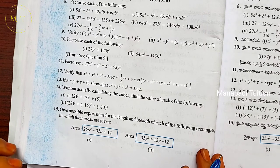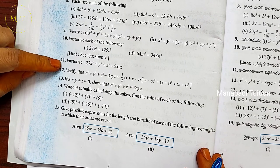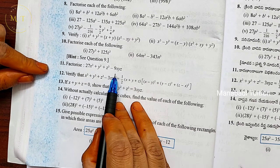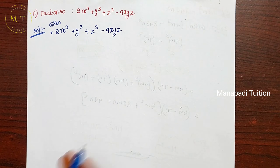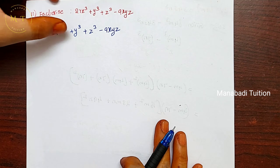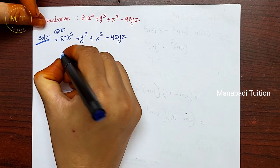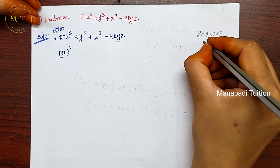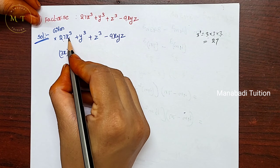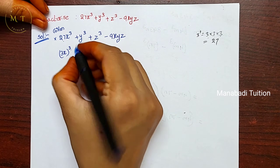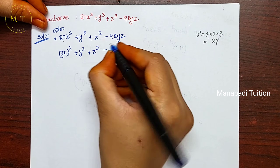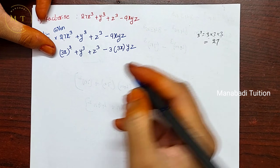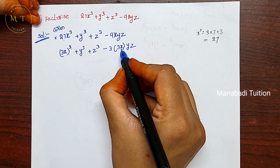9th class, next chapter 2 polynomials, exercise 2.4, question number 11, 12, and 13. Question 11: factorise 27x³ + y³ + z³ - 9xyz. First, note that 27 is a perfect cube: 3³ = 3 × 3 × 3 = 27. So 27x³ = (3x)³. Next, 9xyz = 3 × 3xyz, so we can write it as 3 · (3x) · y · z.